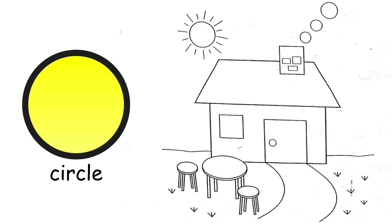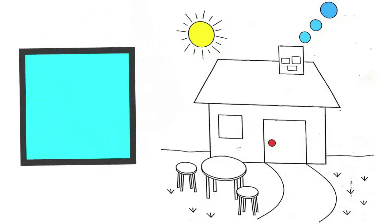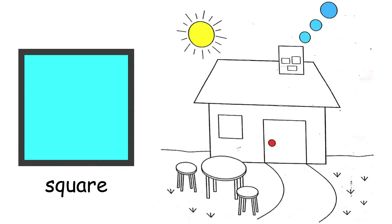Circle. Let's look for the circles. Color all the circles. Square. Where are the squares? Color them.